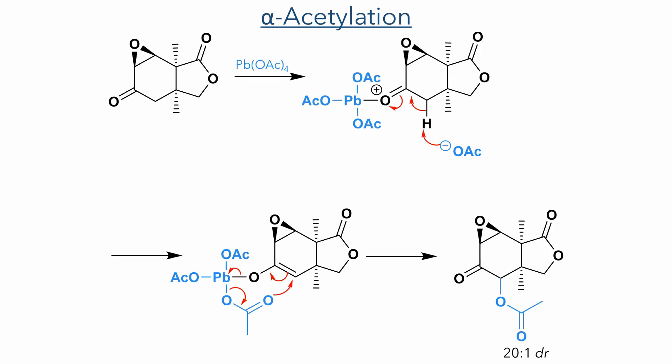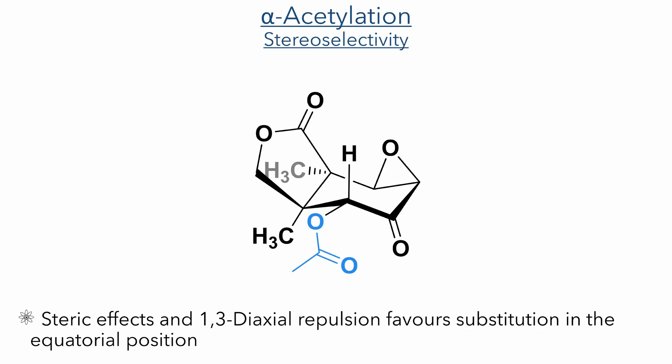This reaction was followed with an acetylation of the alpha position using lead tetraacetate. Both radical and ionic mechanisms have been proposed, but a possible mechanism involves coordination of the lead to the ketone oxygen, increasing its electrophilicity and allowing deprotonation of the alpha hydrogen by the acetate. Addition of an acetate group to the alpha position together with oxidation of the oxygen group and simultaneous reduction of the lead salt completes the reaction, giving the alpha-acetylated ketone in a 20:1 DR. The selectivity is driven by steric effects and the 1,3-diaxial repulsion that would occur if the axial position was acetylated.